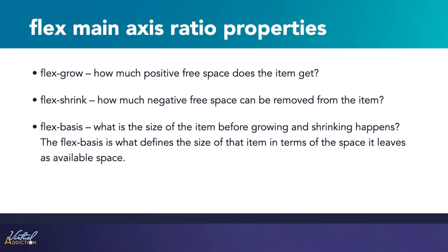These three properties control the following aspects of a flex item's flexibility. Flex grow controls how much of the positive free space the item actually gets. Flex shrink controls how much negative free space can be removed from the item. And flex basis controls what the size of the item is before the growing and shrinking happens. Generally, when we use these three properties, we express them using the flex property shorthand.